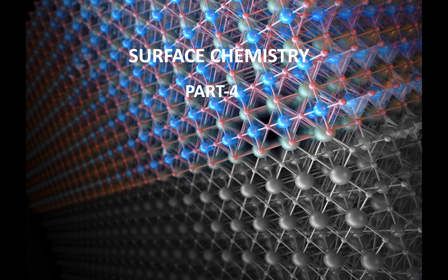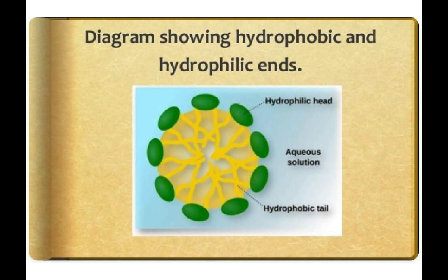We will start with this diagram which shows the hydrophilic and hydrophobic ends. The ones marked in green are called the hydrophilic head. Hydrophilic means water-loving — these are the COO part which remains outside on the surface. The hydrophobic tail means water-repelling, which always points towards the centre of the sphere.